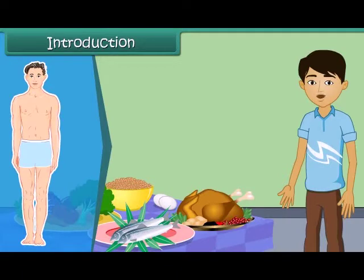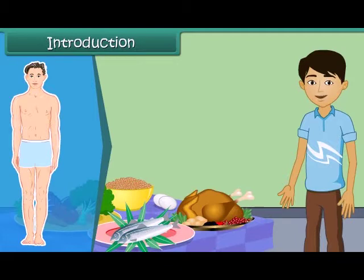We get our food from both plants and animals. Food has to be produced on a large scale to meet everyone's requirements. In this module, we will discuss about crop production and its management for the distribution of food.